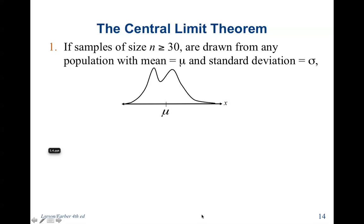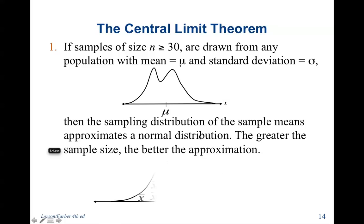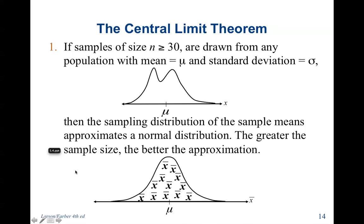If samples of size n greater than or equal to 30 are drawn from any population with mean equal to mu and standard deviation equal to sigma, then no matter what the distribution looks like before, the sample means approximate a normal distribution. The greater the sample size, the better the approximation.